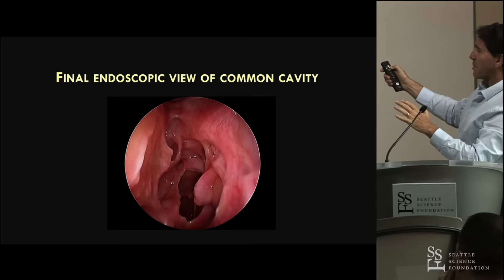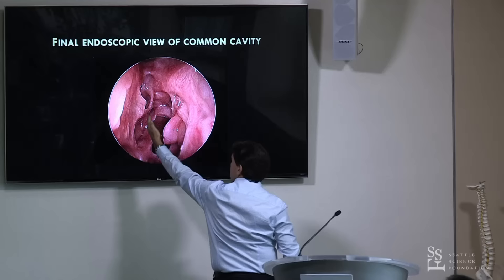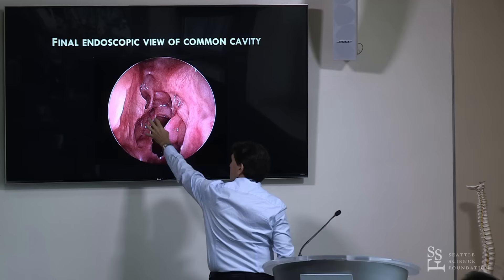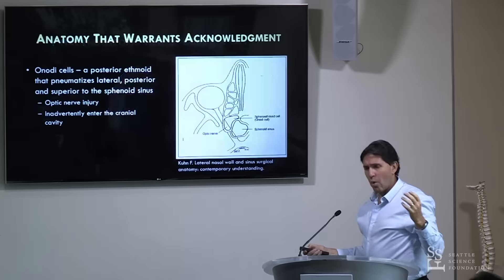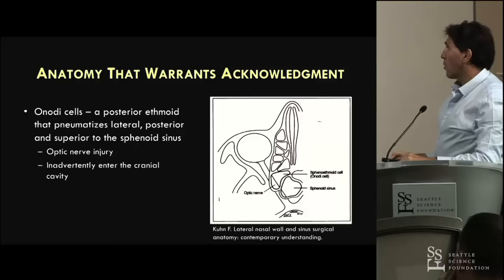Your final endoscopic view is going to be looking straight down the lamina - the maxillary sinus almost going into the sphenoid, the ethmoid cavity wide open, one wide open cavity.